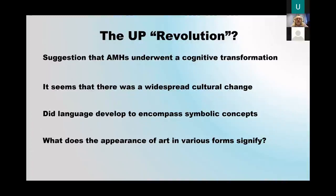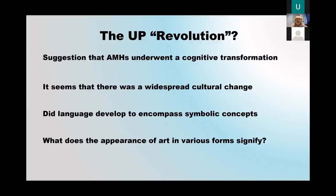The Upper Paleolithic Revolution is the suggestion that anatomically modern humans underwent a cognitive transformation. We can't see this in physical remains or skeletons — which is really all we've got left — and not much in the DNA either. But there does seem to have been a widespread cultural change. There's a suggestion that language developed to the point where it encompassed symbolic concepts, whereas before it didn't. Of course there's no way we'll ever really know this. But what does the appearance of art in various forms signify? This is one of the questions that really fascinates me.